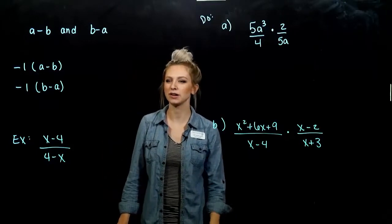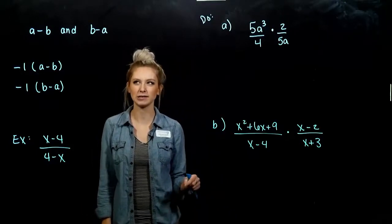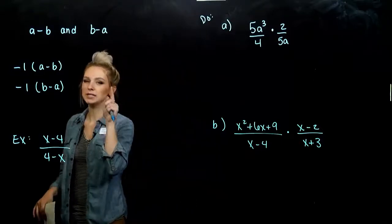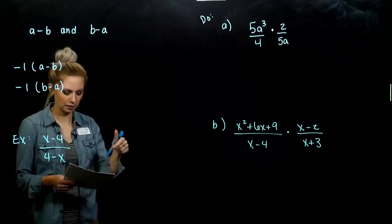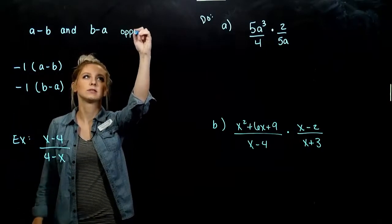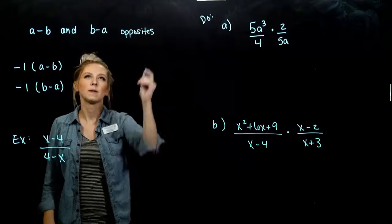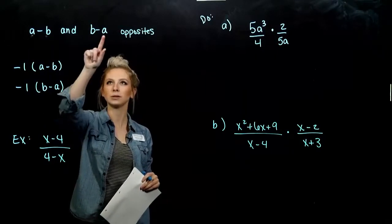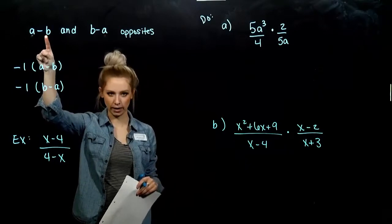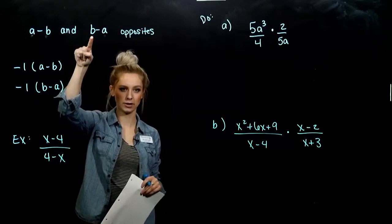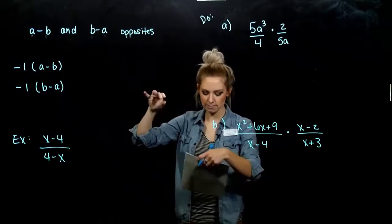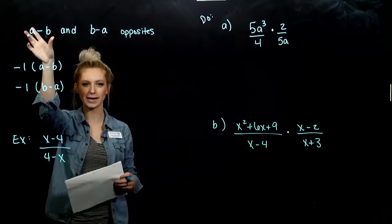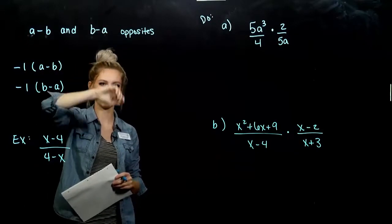Another thing we need to recognize is when expressions are almost exactly the same, but something is a little bit off. Our first example: A minus B and B minus A — those things are opposites. They're almost exactly the same, but A is positive in one and negative in the other, and B is negative in one and positive in the other. So they're opposites of each other. If I take one of those expressions and multiply it by negative 1, I get the other one out, and vice versa.